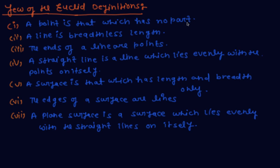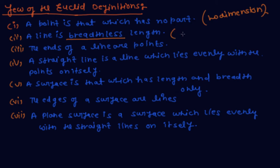The first definition: a point is that which has no part — meaning no dimensions, no length, no breadth, and no height. The second definition: a line is breadth-less length, meaning the length where breadth is zero.